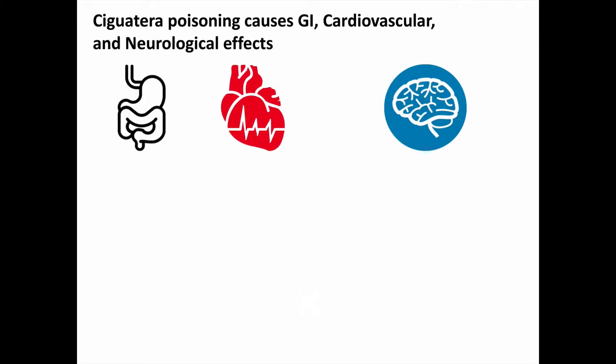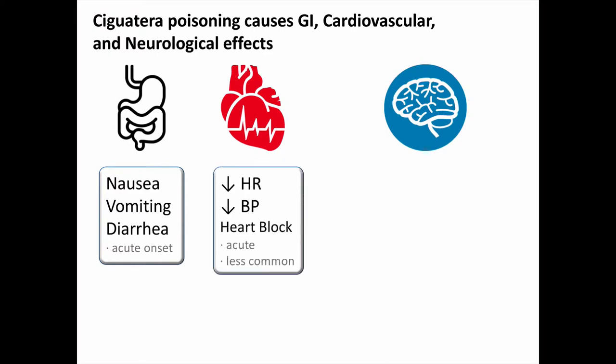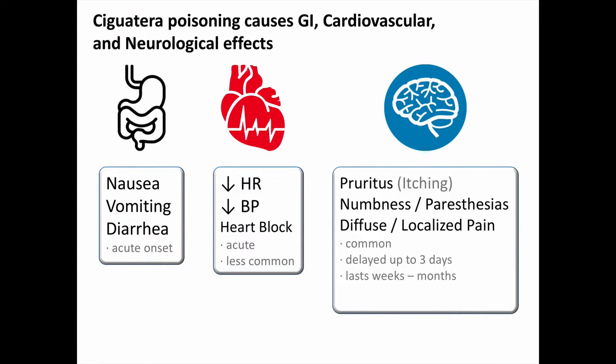Clinically with ciguatera poisoning, patients can get gastrointestinal, cardiovascular, and neurological signs and symptoms. Nausea, vomiting, and diarrhea are pretty common and are of acute onset. Also acutely, but less commonly seen, are bradycardia, hypotension, and heart block. Neurological symptoms include pruritus, itching, numbness, paresthesias, and diffuse or localized pain with myalgias and arthralgias. These neurologic symptoms are common, but may be delayed up to a couple of days, and some may persist for weeks or months.